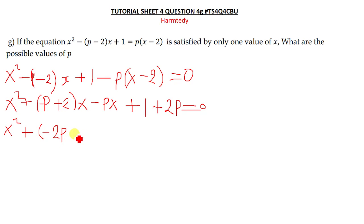Then we have plus 2 there. Then we put our x outside. Then plus 1 plus 2p, which is equal to 0.